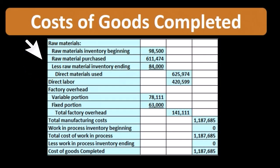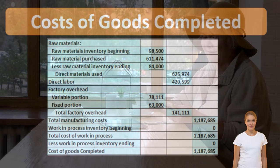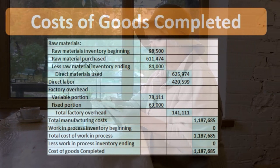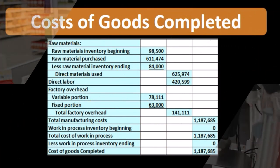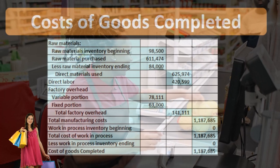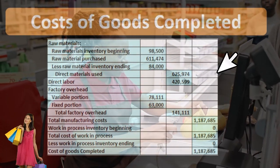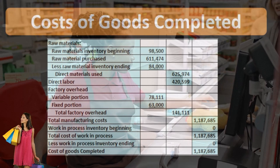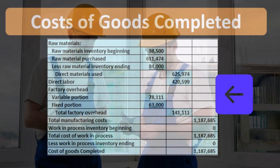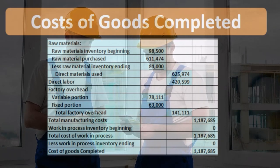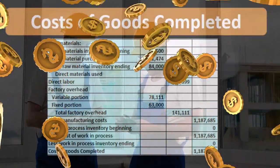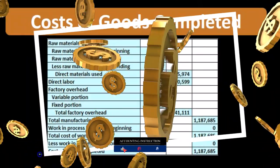Don't get confused between the cost of goods completed calculation and the cost of goods sold calculation. Cost of goods sold is a calculation we would have even as a merchandising company, where we have beginning costs plus purchases. In this case, we replace purchases with cost of goods completed, because we're not buying inventory — we're buying raw materials and then producing inventory, adding direct labor and overhead. That gives us the amount available for sale, and subtracting ending inventory gives us cost of goods sold.